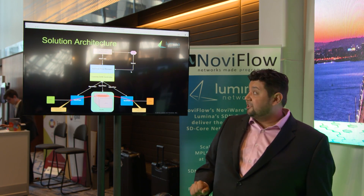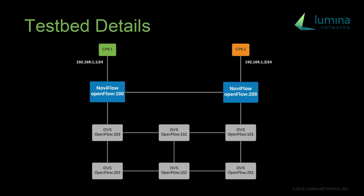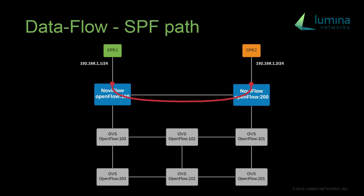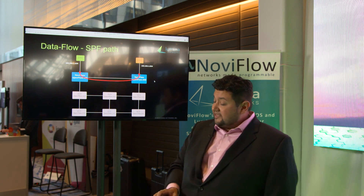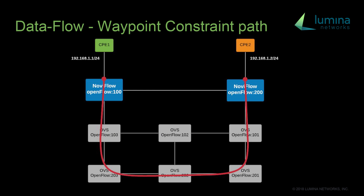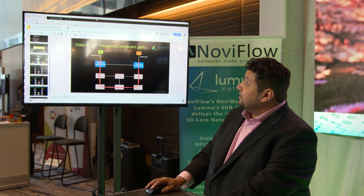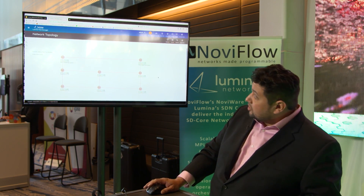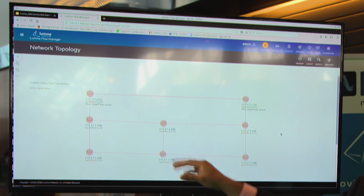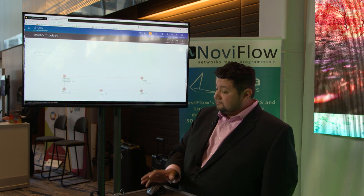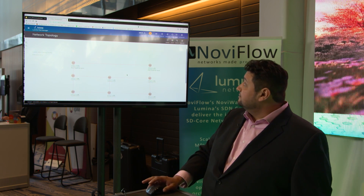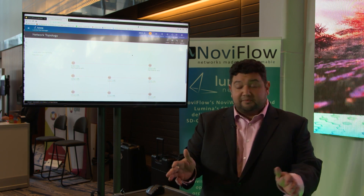Our first step is going to be to let Lumina Flow Manager build the path the way it wants to — it's basically going to use the shortest path first algorithm. It'll build that and we can evaluate it, then we'll give it some constraints about where we want the data to flow and build that constrained path as well. Let me introduce you to the user interface of Lumina Flow Manager. At our base we have our network topology — this is all discovered. These are all OpenFlow switches discovered by the controller and structured as a graph. You'll see it update every now and then and rebuild the graph.